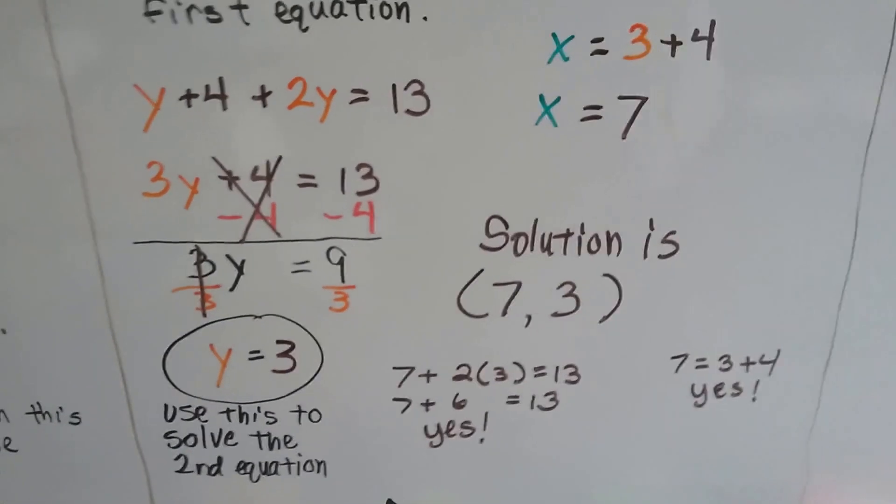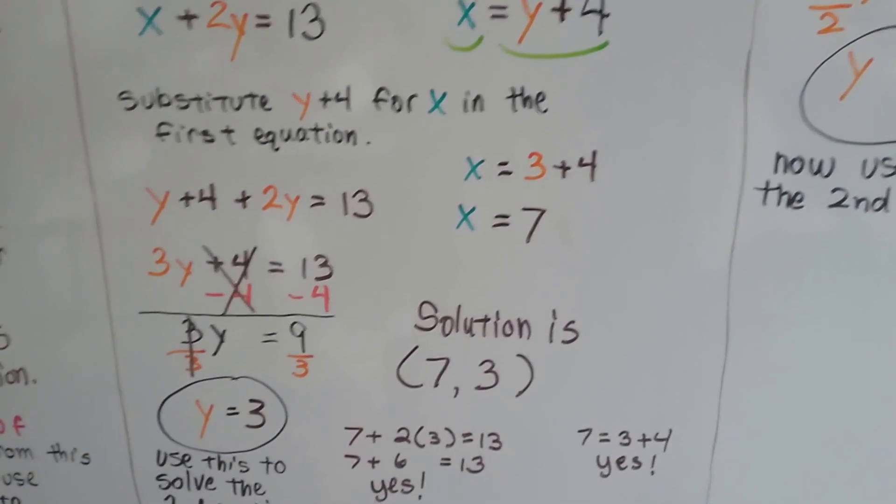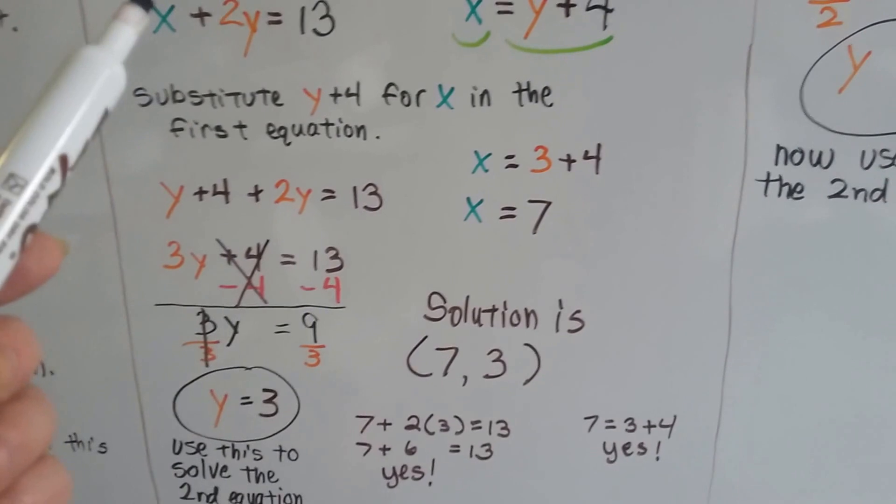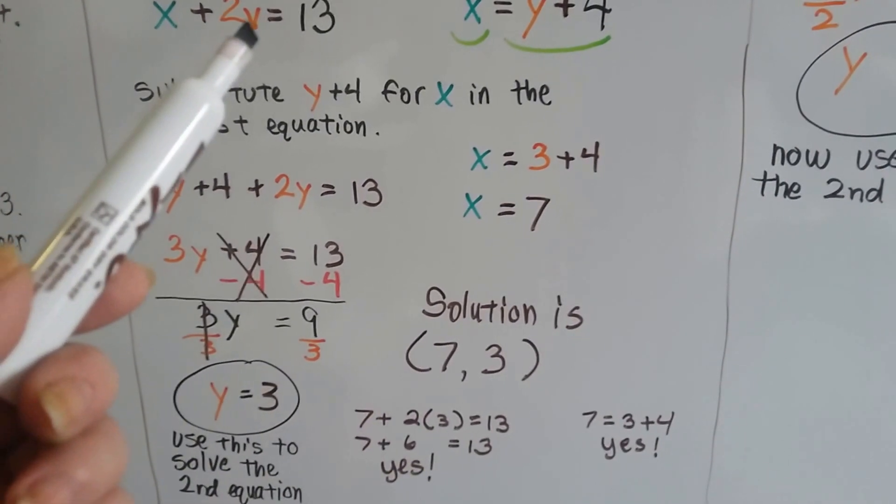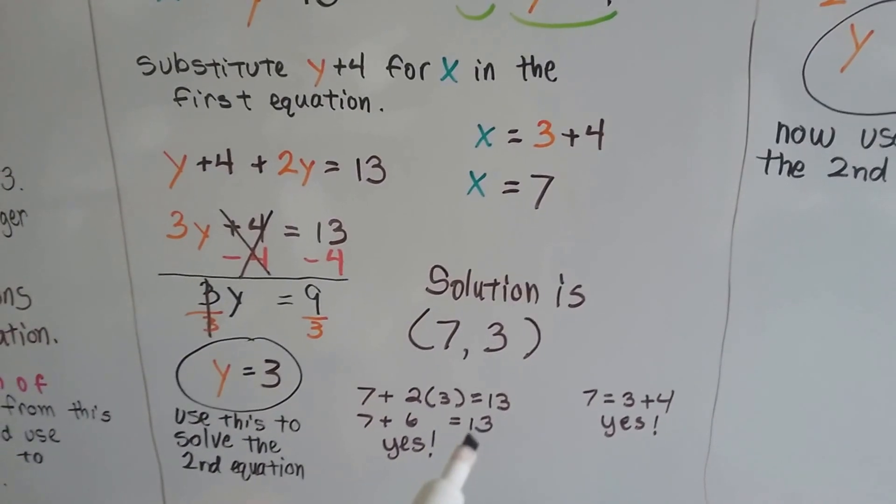We check it real quick. We plug it into these equations. This one and this one are original equations to see if it's true. And 7 plus 3 times 2 is 13. Yeah, that works. 7 plus 6 is 13.